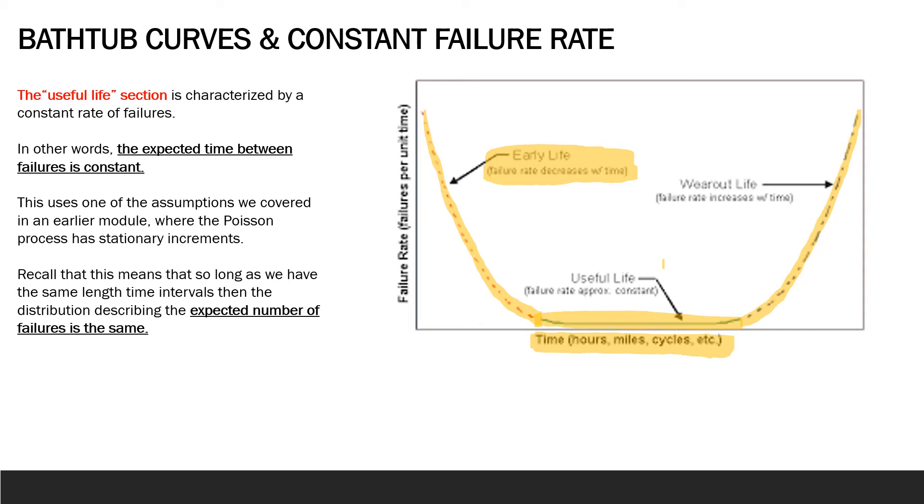But understanding this, let's actually just focus on the useful life period when we're talking about the homogeneous Poisson process case. So in this useful life section we have a constant rate of failures. In other words, the expected time between failures is constant.